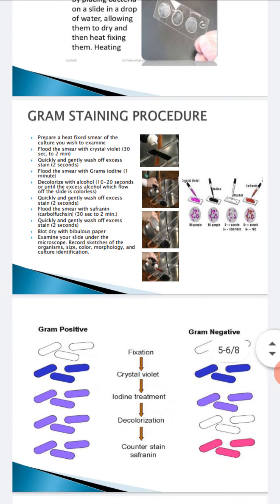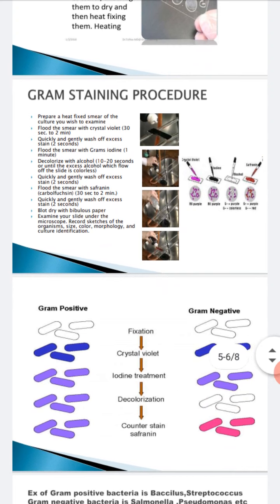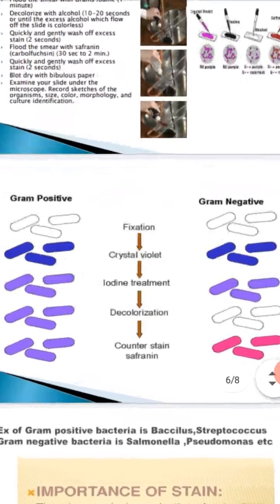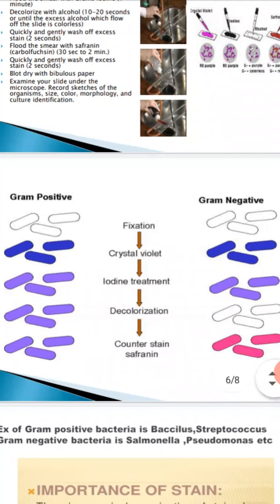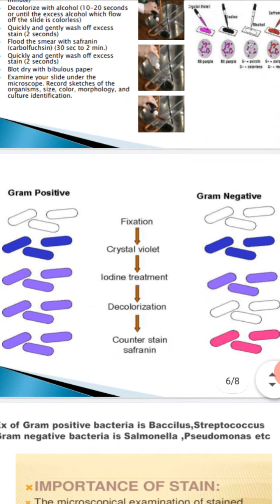After we have completed the staining, we observe it under the microscope. What you are going to see: you will see purple color, and purple color means it is a gram positive bacteria. For gram negative bacteria, you will see pink color.